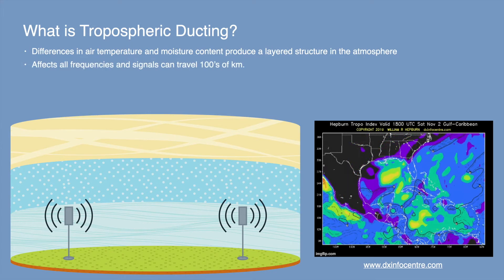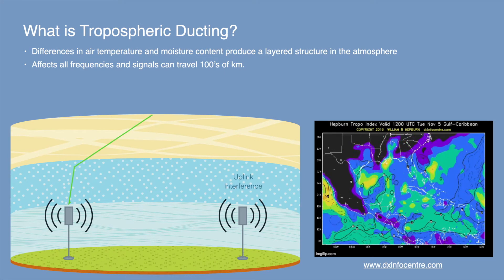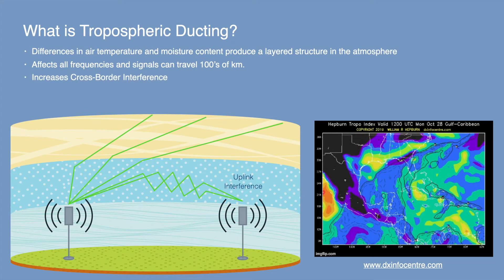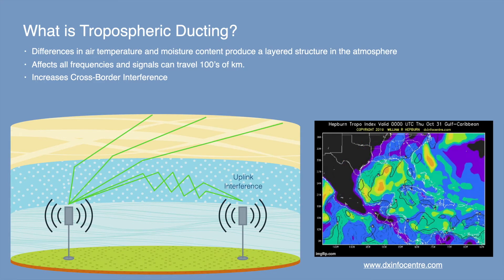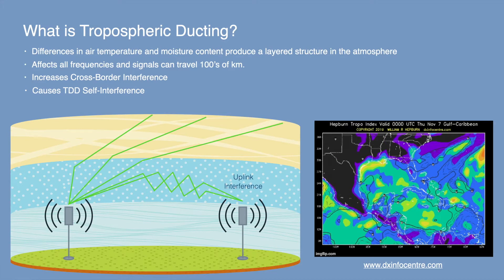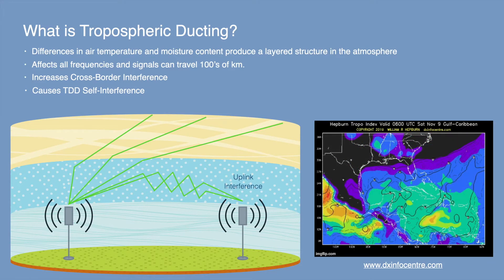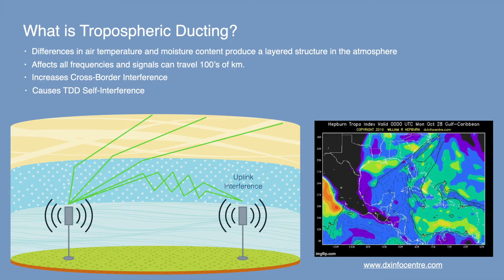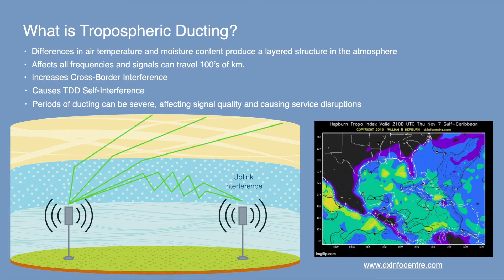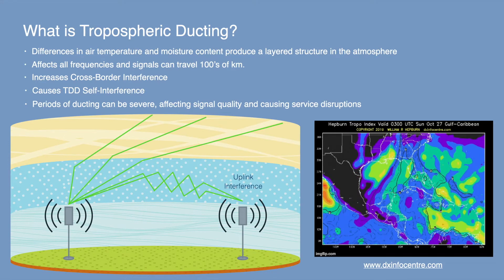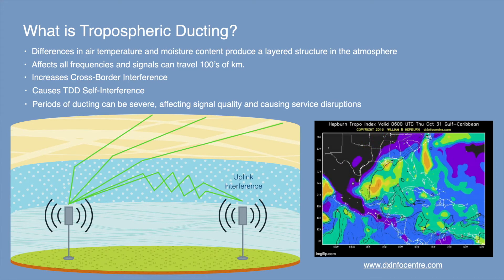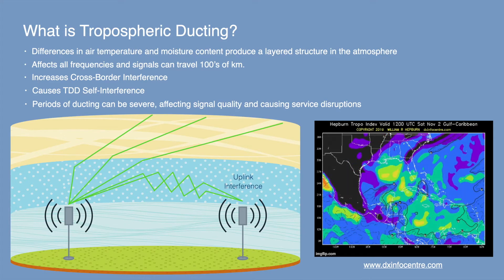Transmissions from neighboring countries will propagate further when ducting is taking place and can cause uplink interference to distant base stations — this is referred to as cross-border interference. The downlink transmissions of TDD base stations can propagate across large distances causing interference to the uplink of faraway base stations; this is referred to as TDD self-interference. Interference during periods of ducting can be severe, affecting signal quality and causing service disruptions sometimes for several hours at a time. Since ducting interference is intermittent, it is challenging for operators to isolate and mitigate, and these conditions often occur under the radar of operators.